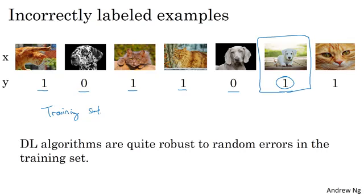Maybe sometimes the labeler just wasn't paying attention or they accidentally randomly hit the wrong key on the keyboard. If the errors are reasonably random, then it's probably okay to just leave the errors as they are and not spend too much time fixing them. There's certainly no harm to going into your training set and re-examining the labels and fixing them. Sometimes that is worth doing, but your algorithm might be okay even if you don't, so long as the total data set size is big enough and the actual percentage of errors is maybe not too high.